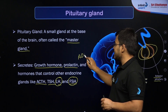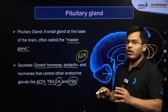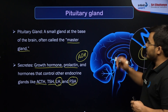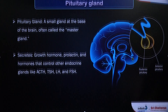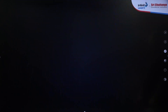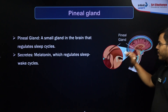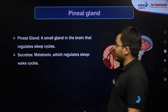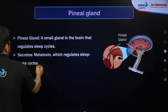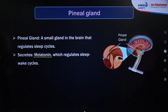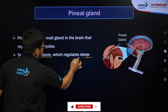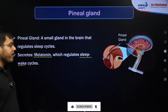One more important hormone released by the pituitary gland is ADH — antidiuretic hormone, also known as vasopressin. Next is the pineal gland, which is also located in the brain. One very important hormone, melatonin, is secreted by the pineal gland, and it regulates the sleep-wake cycle and other circadian rhythms in the body.